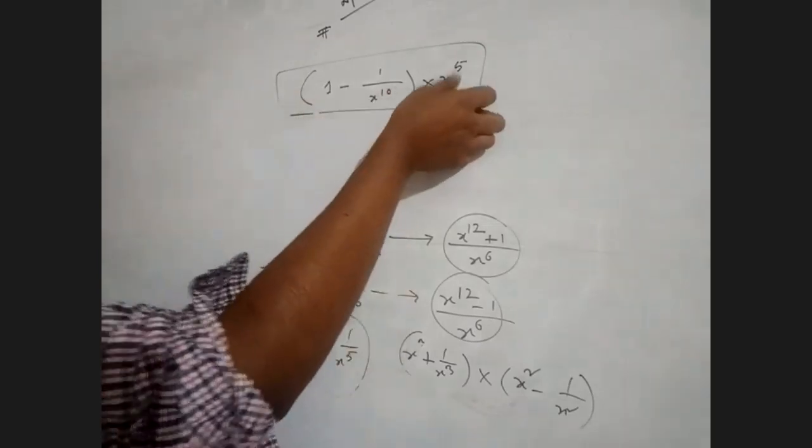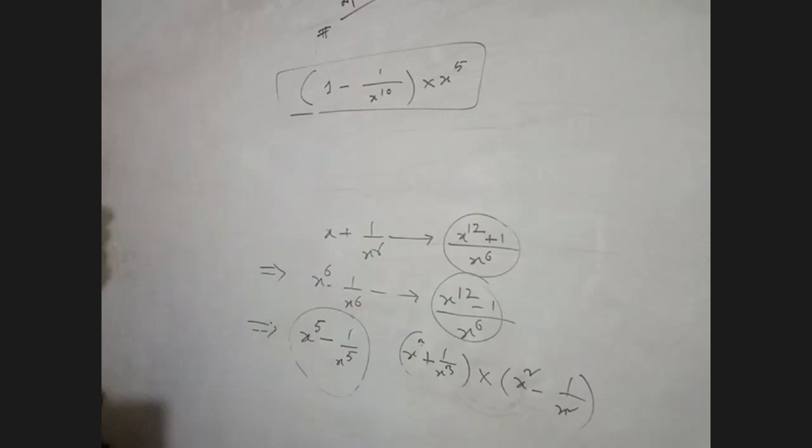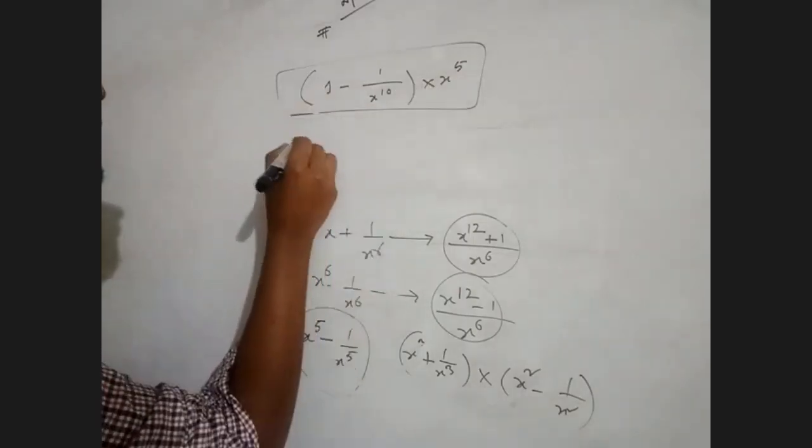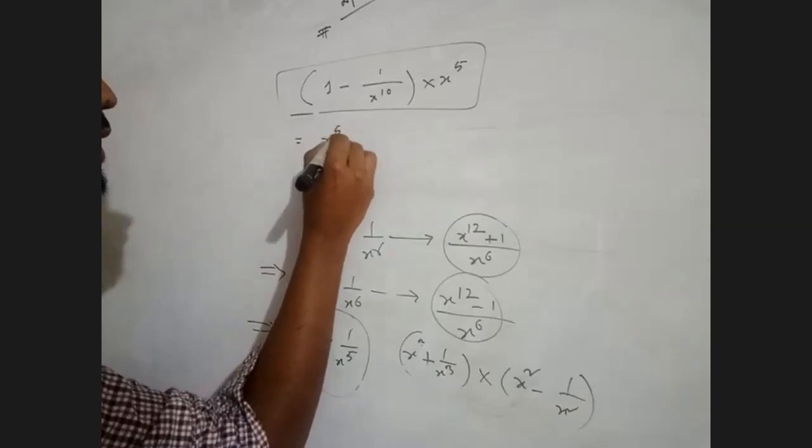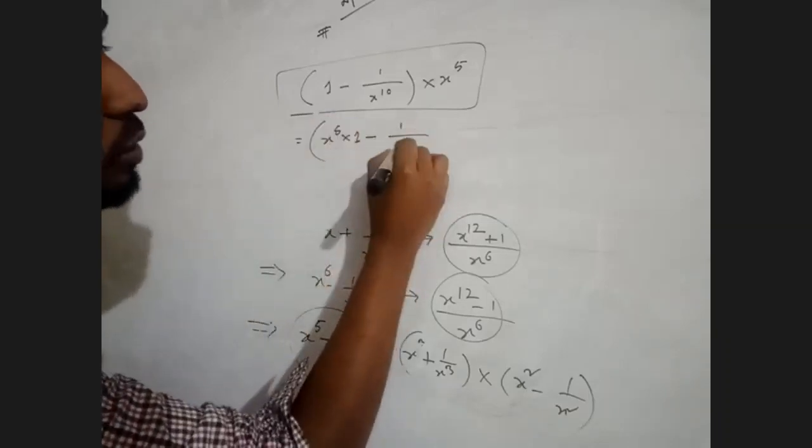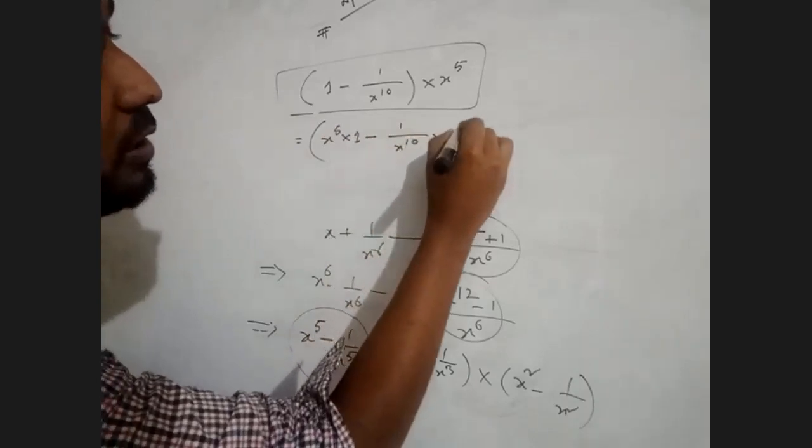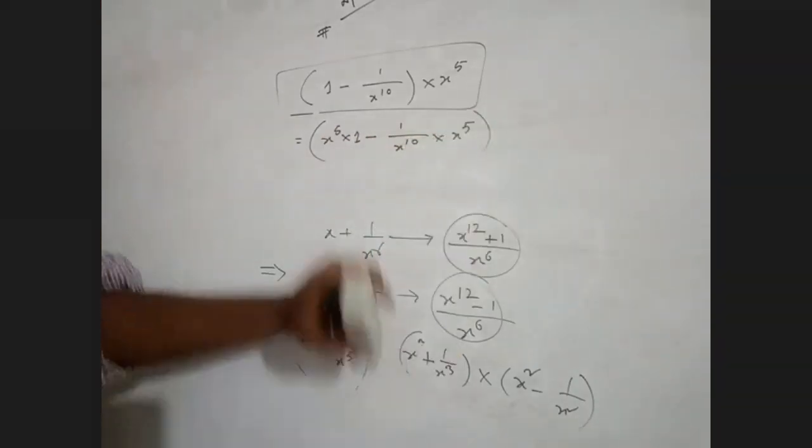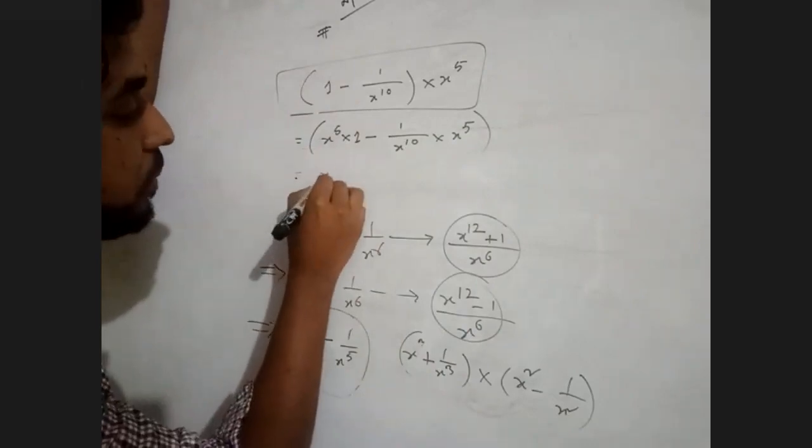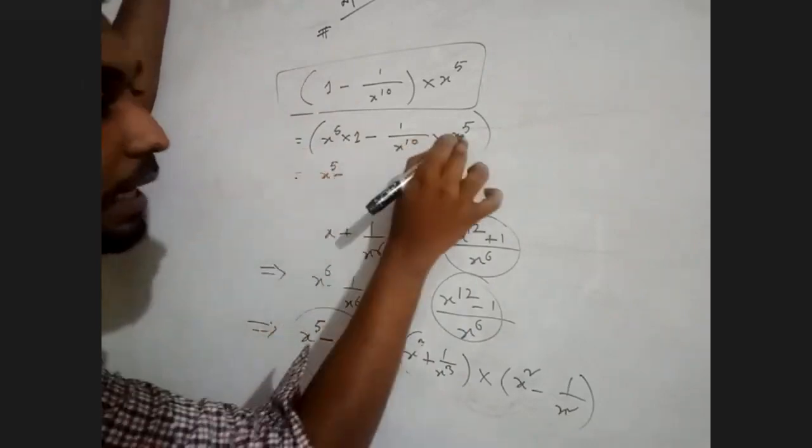How do you do this? We can do this one. We can see how u to the power of 10 into x to the power of 5. 1 is 1 by x to the power of 5. How will the same our x to the power of 5?